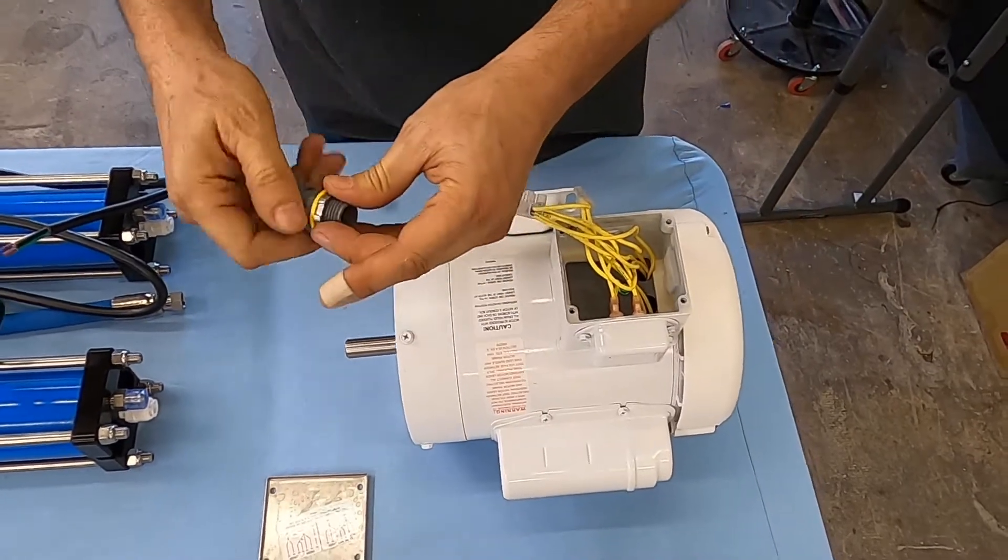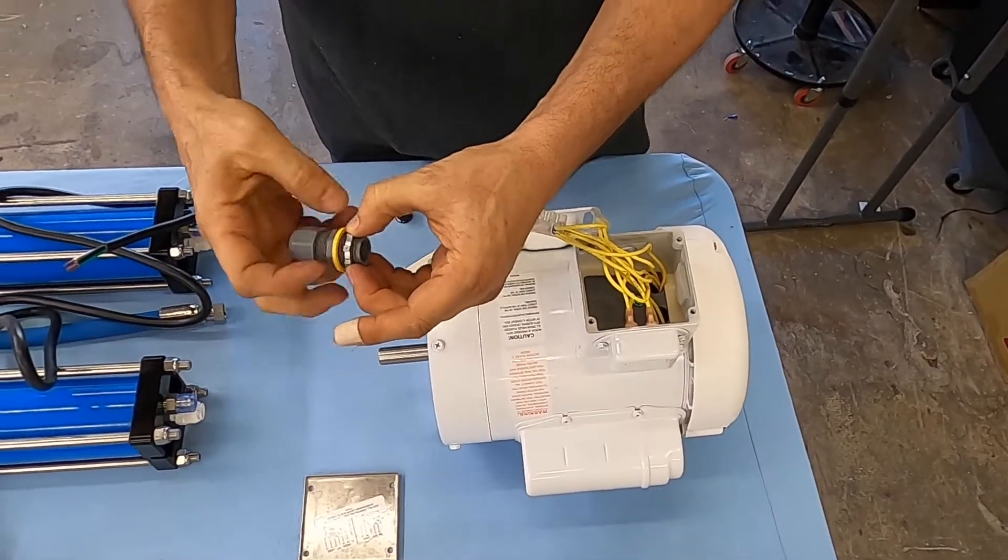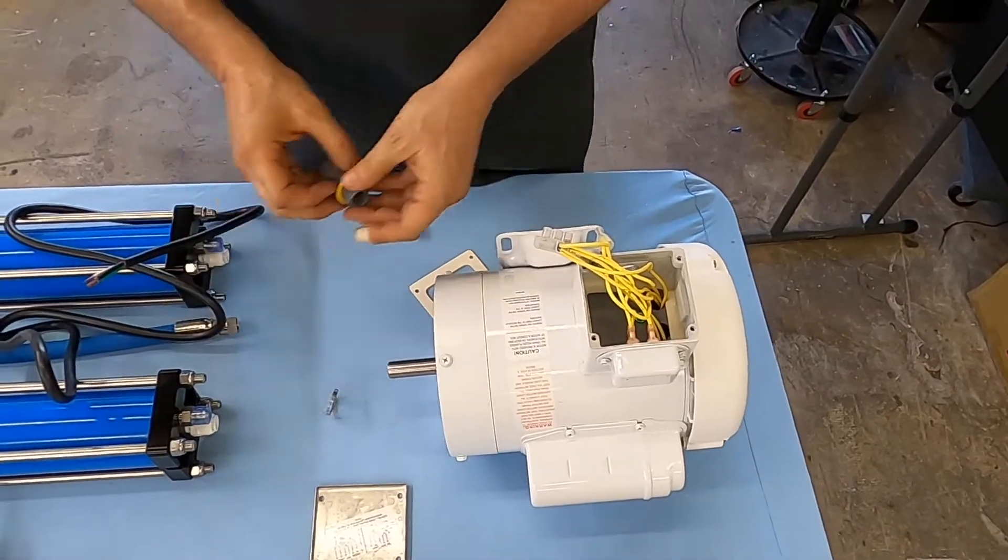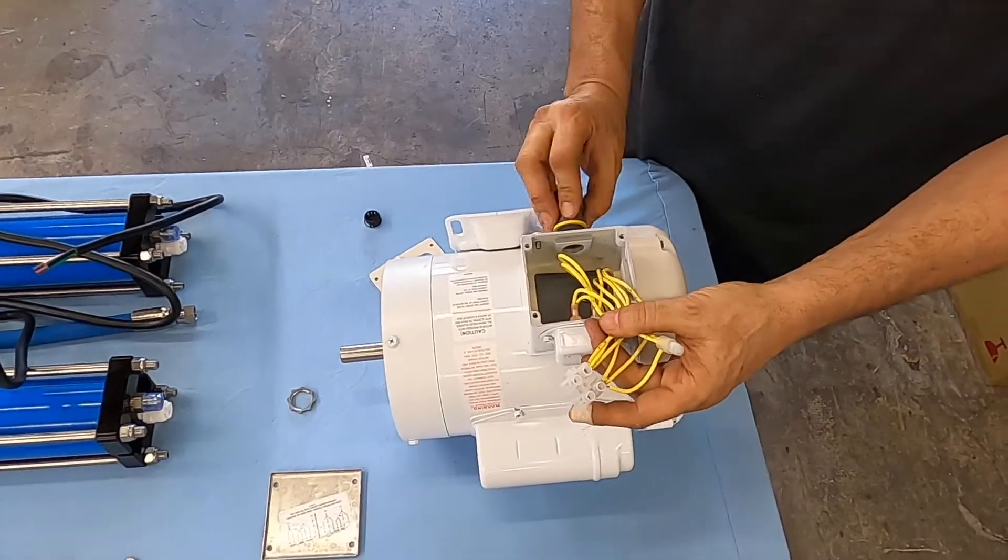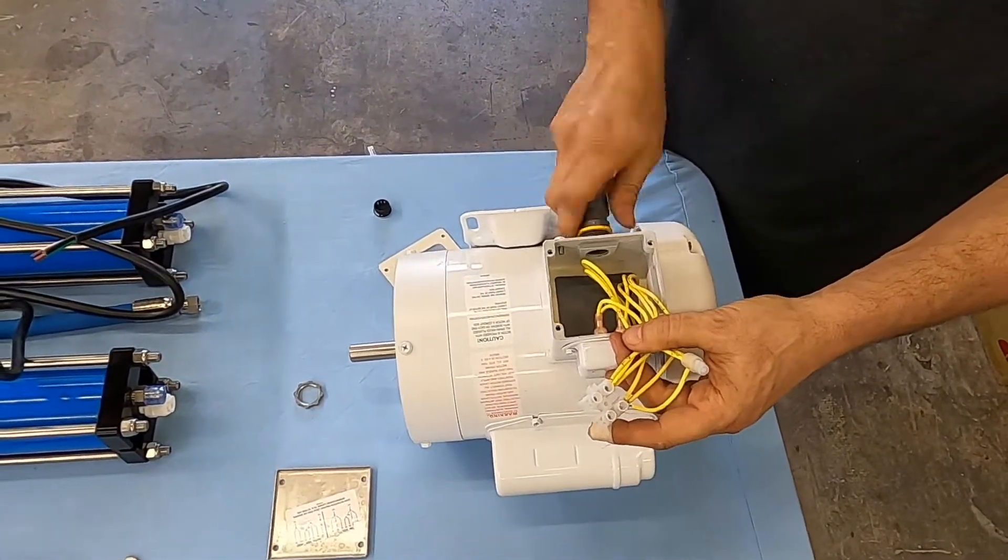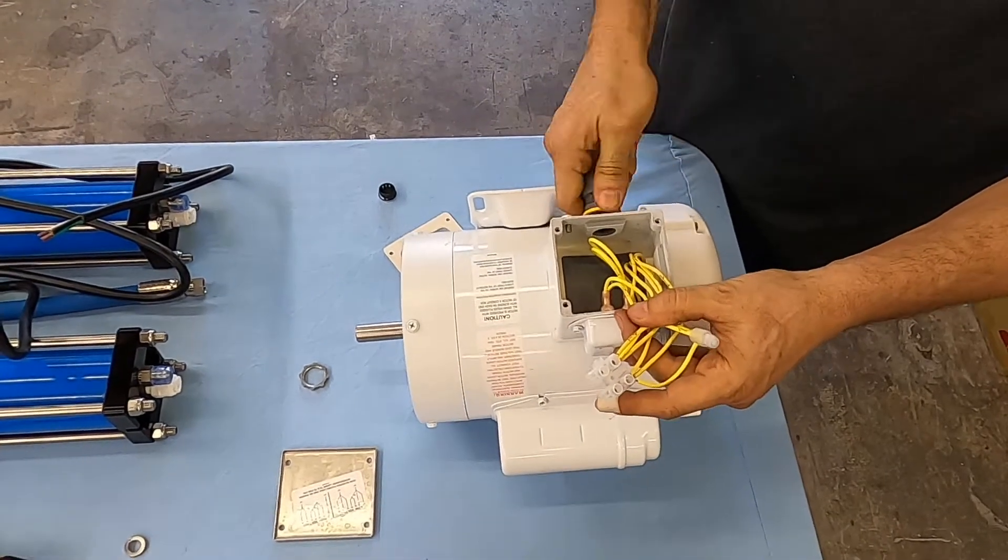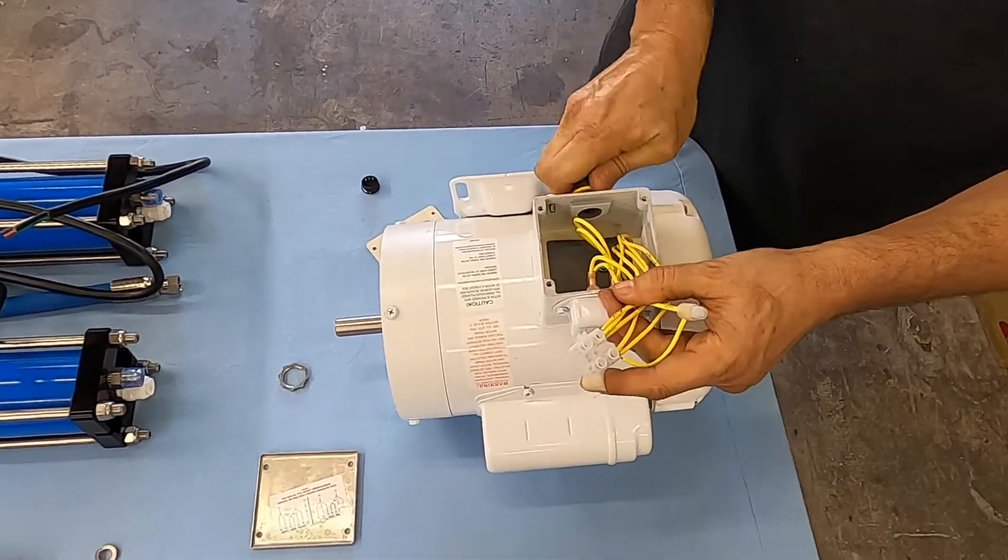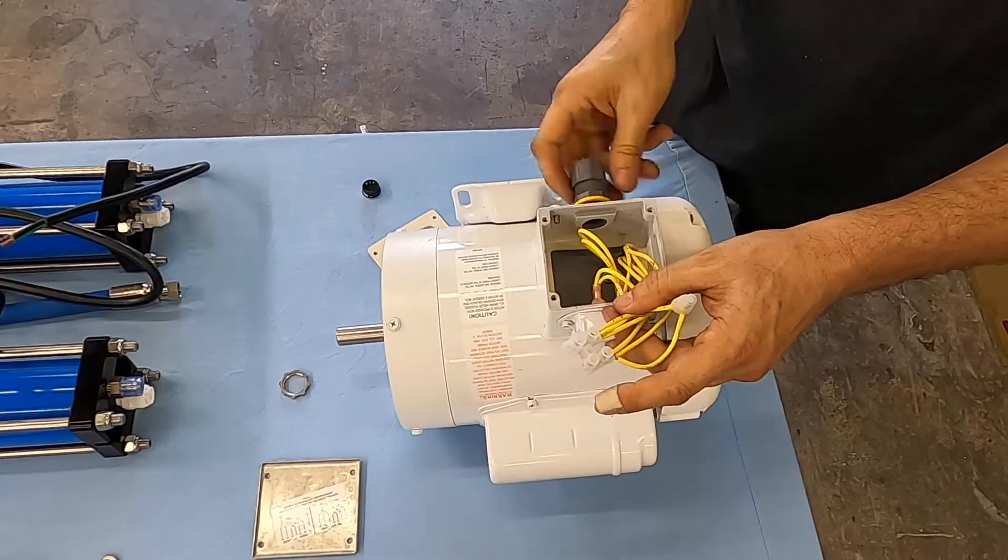Then we have the protector, which comes with your kit, which threads at the bottom of this. And then you take a pair of pliers and you snug it, and then you take this out.